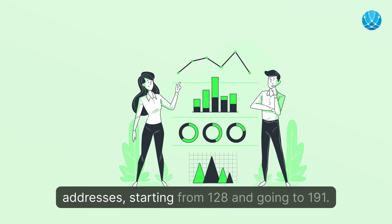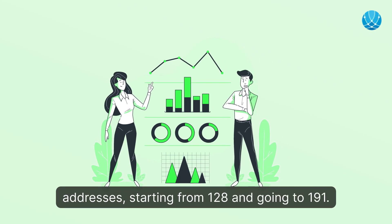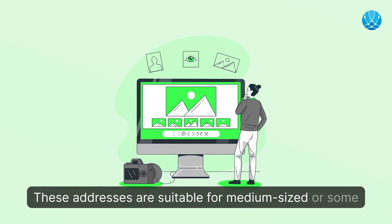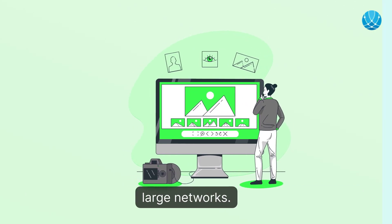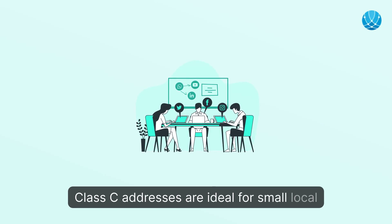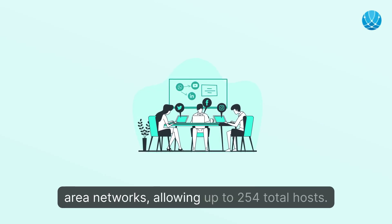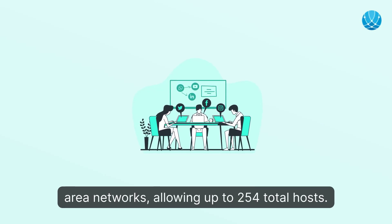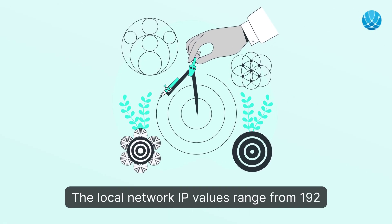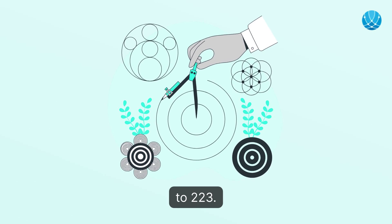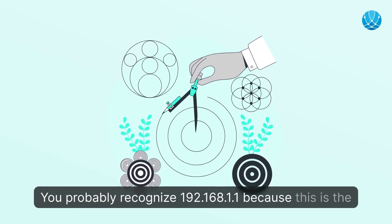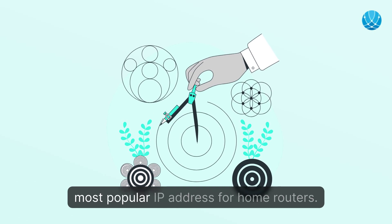Class B provides a substantial number of host addresses, starting from 128 and going to 191. These addresses are suitable for medium-sized or some large networks. Class C addresses are ideal for small local area networks, allowing up to 254 total hosts. The local network IP values range from 192 to 223.